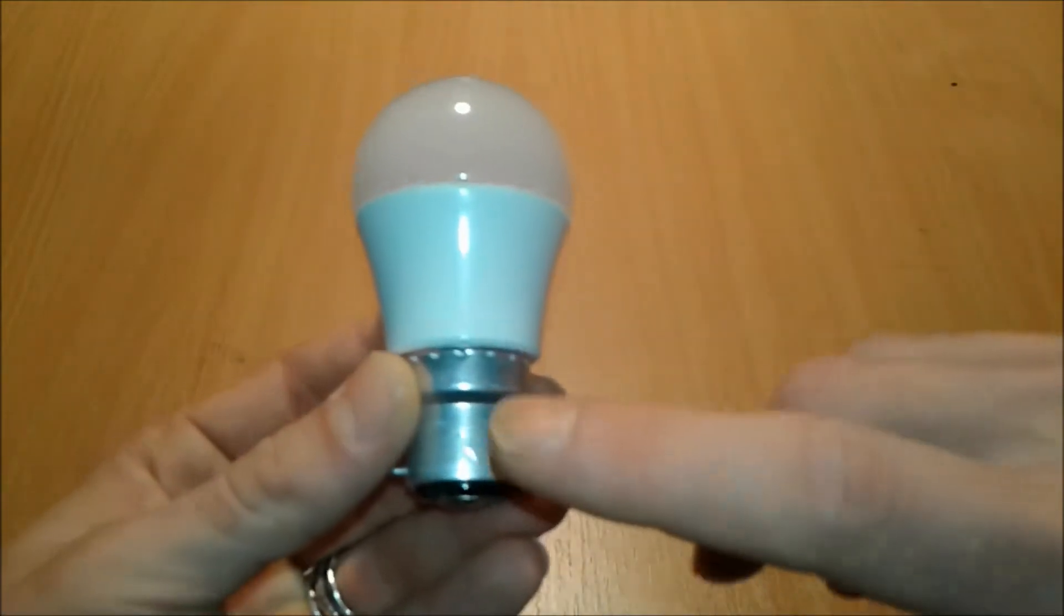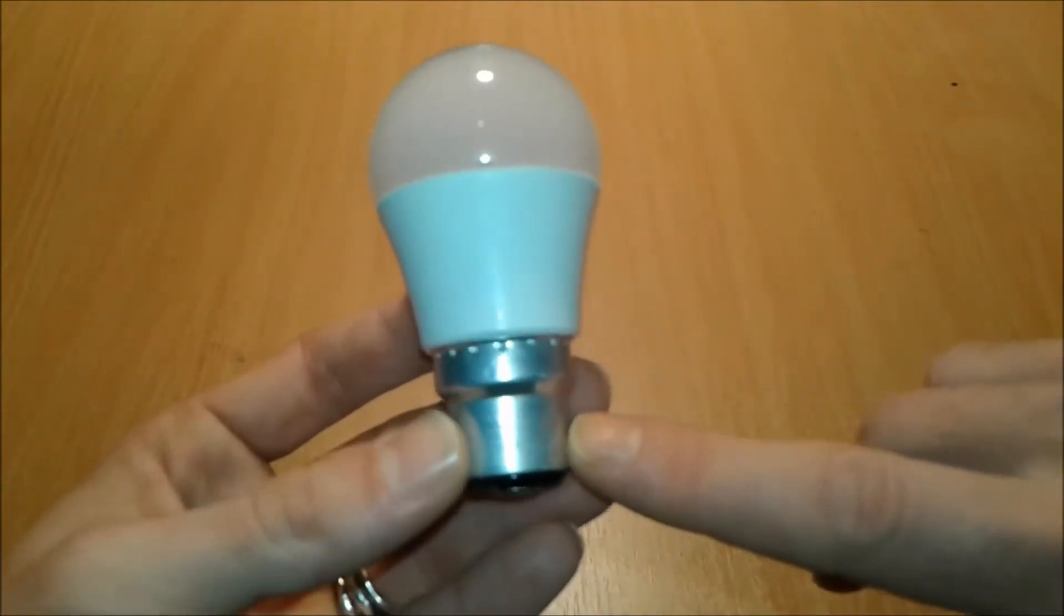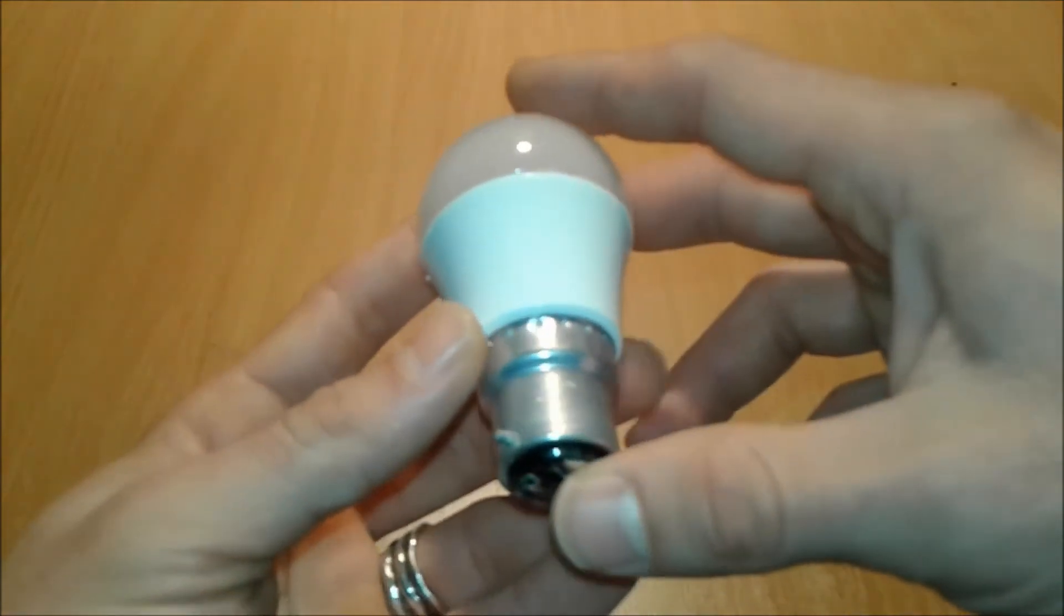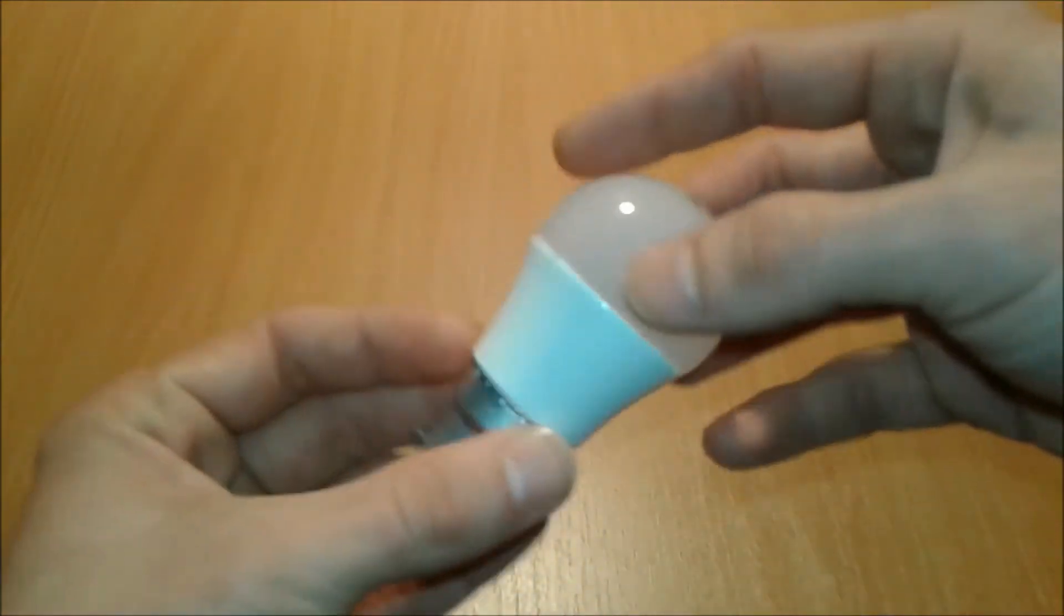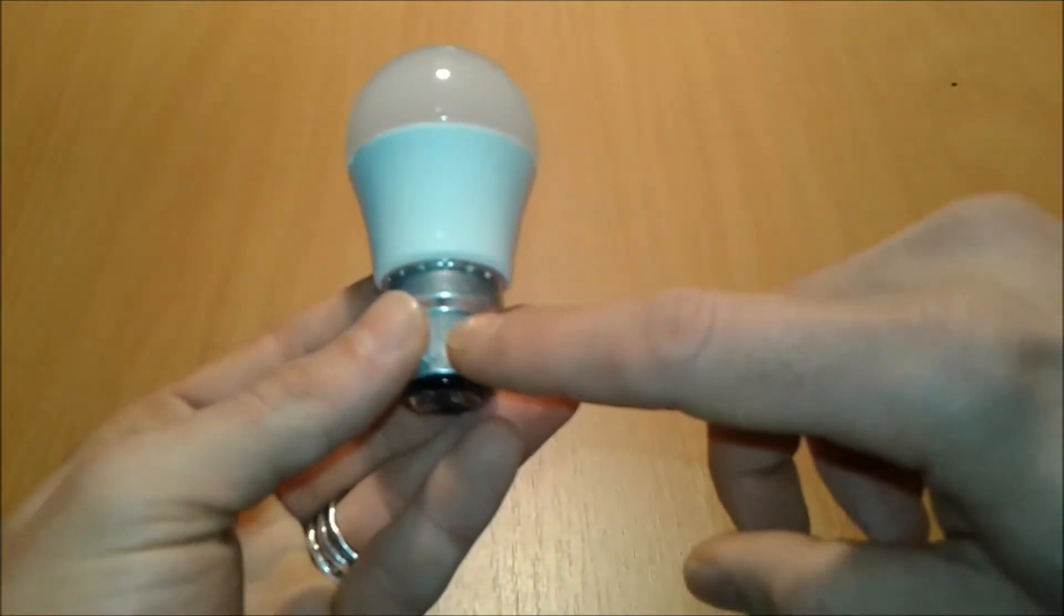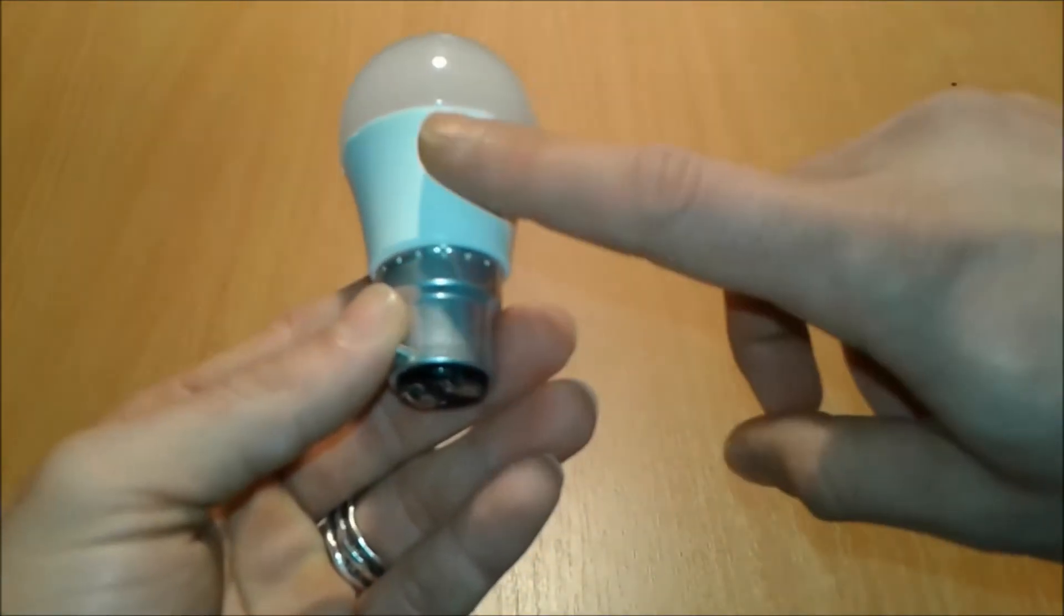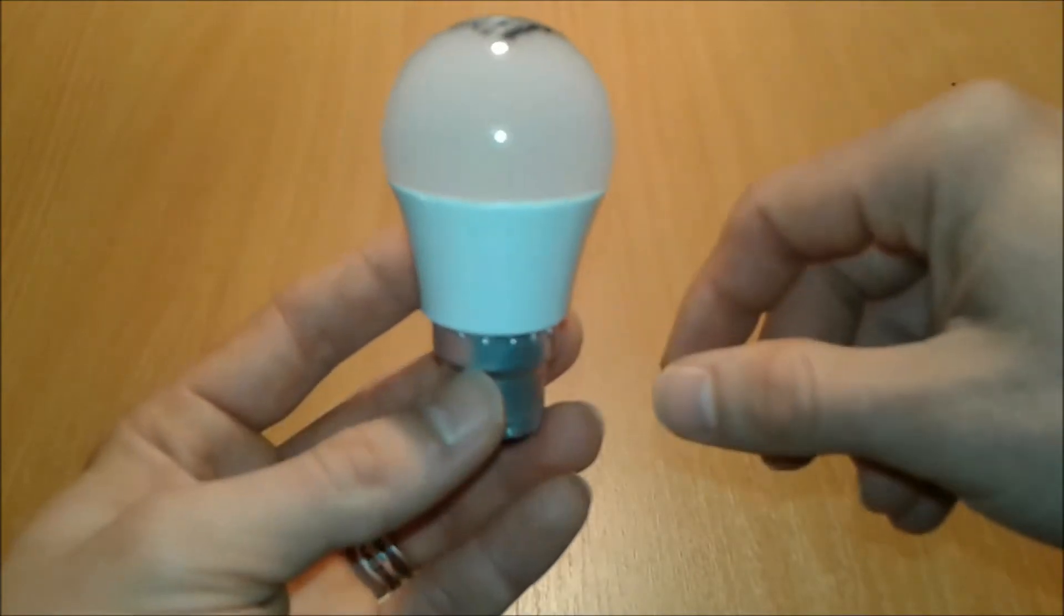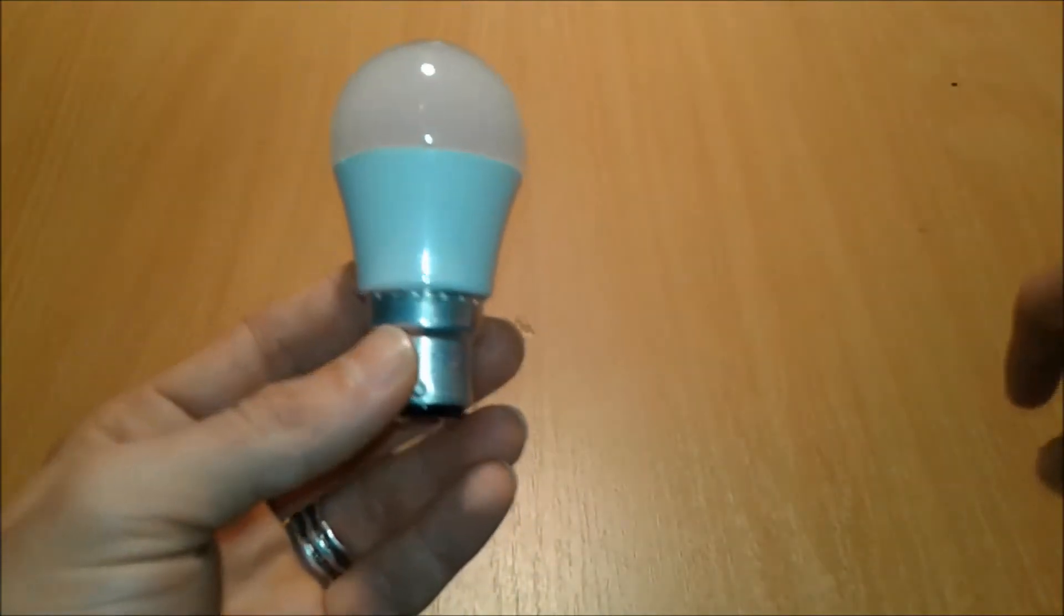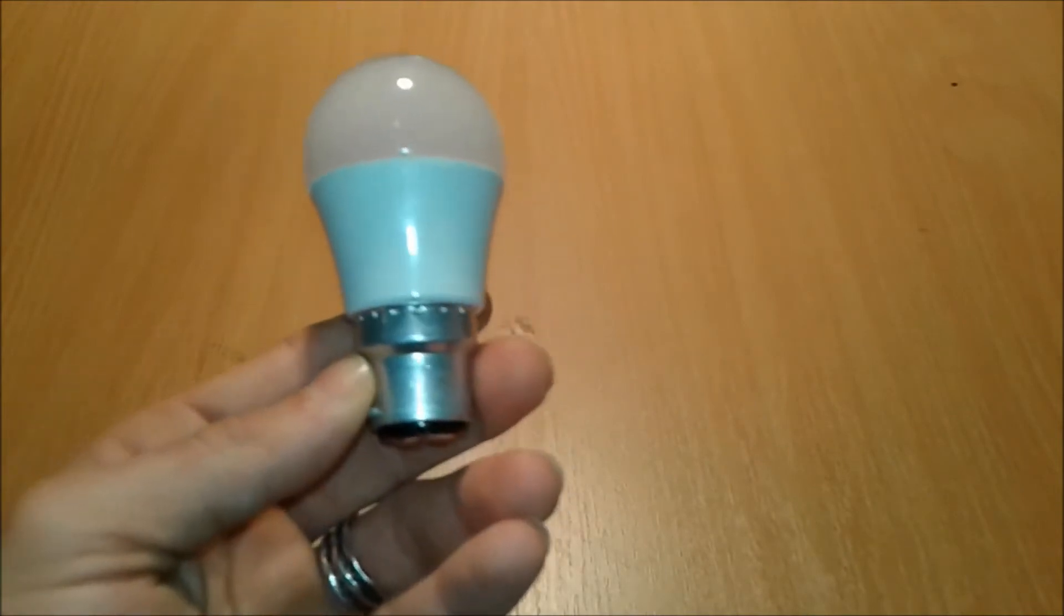The thing about this LED bulb manufacturing project is it's very easy. You've got some parts. This is plastic and metal, but basically inside there is a driver and an LED. Depending on how good it is, it can have a heat sink and some controllers and so on.